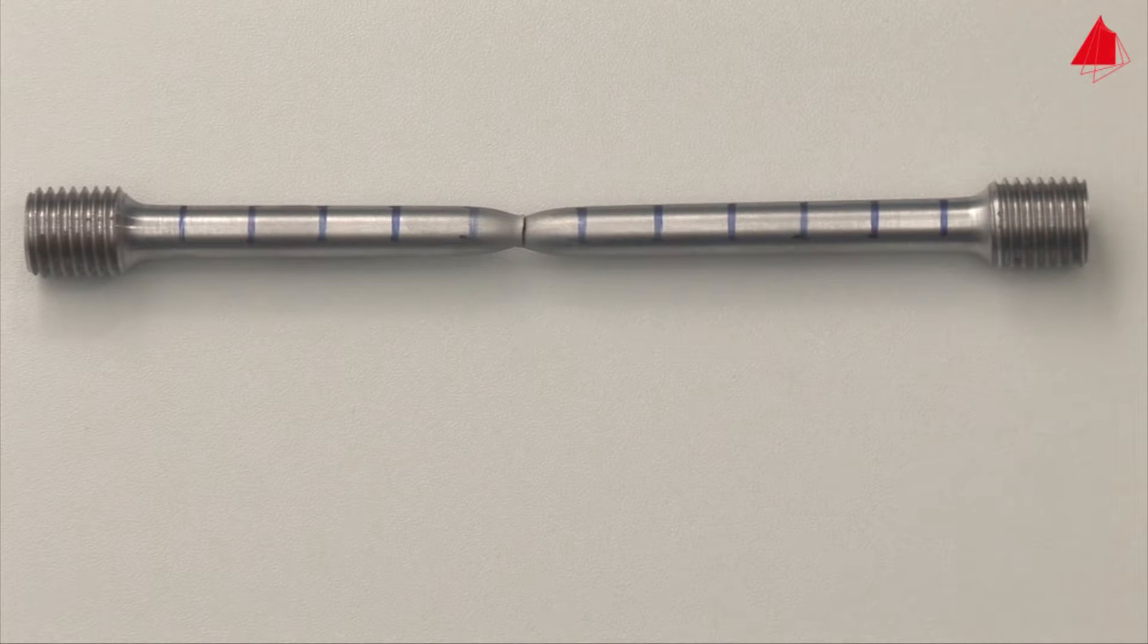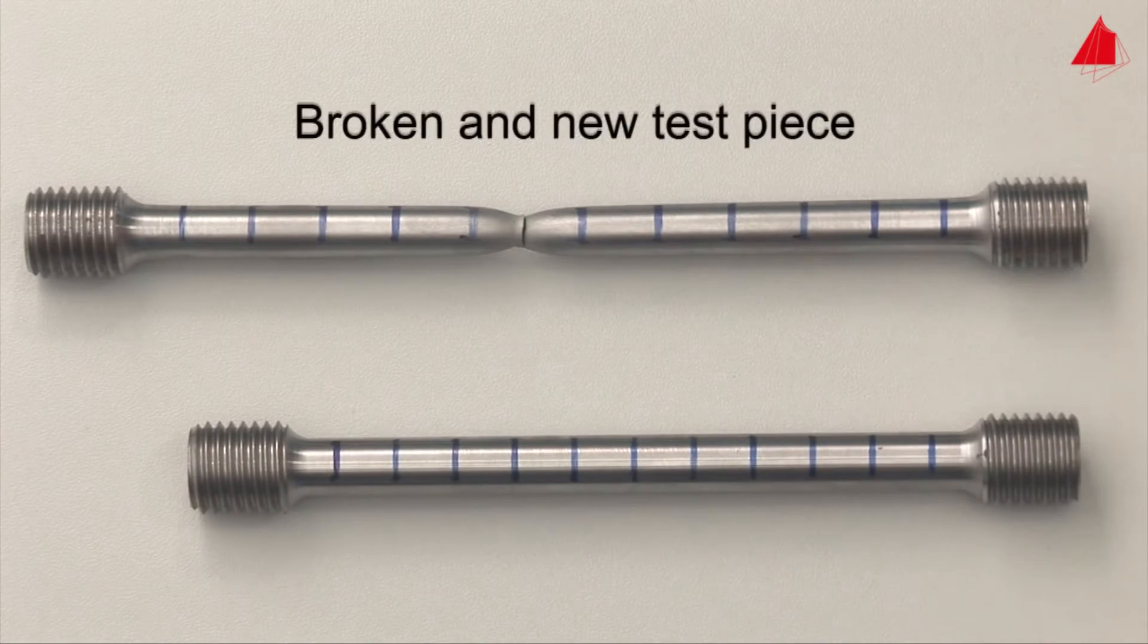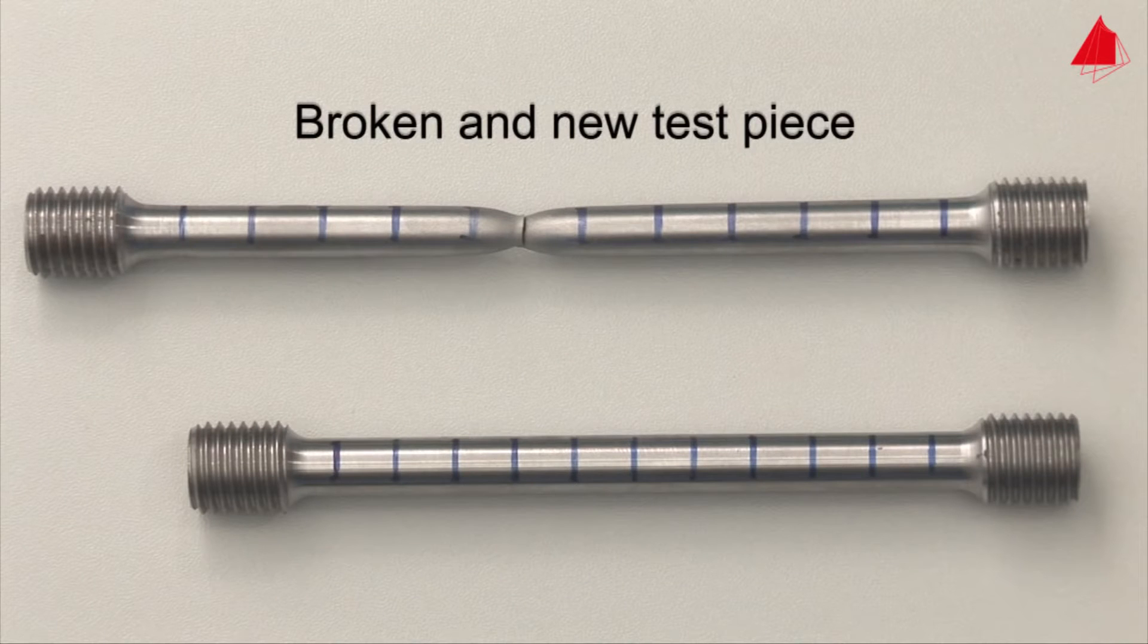With the help of the distance marks, the percentage elongation after fracture can be determined. This is the permanent strain after fracture and amounts to about 30% in this example. Please note that the percentage elongation after fracture depends on the length to diameter ratio.